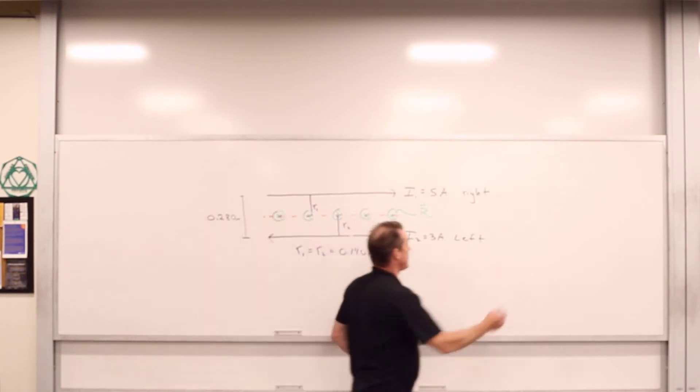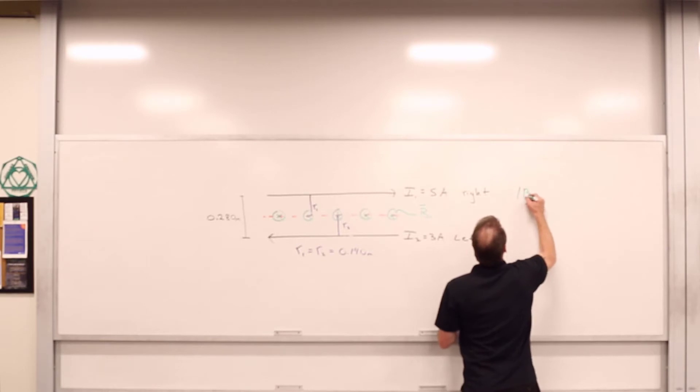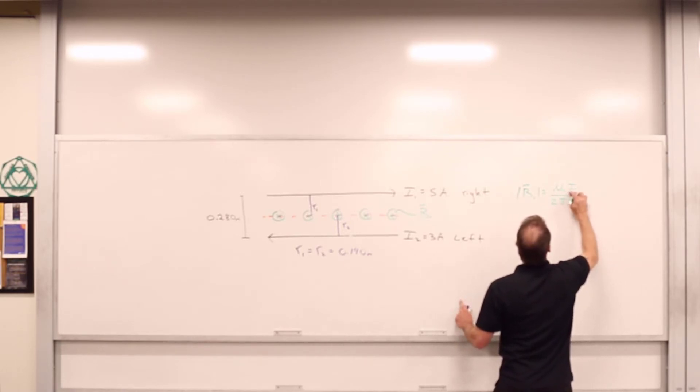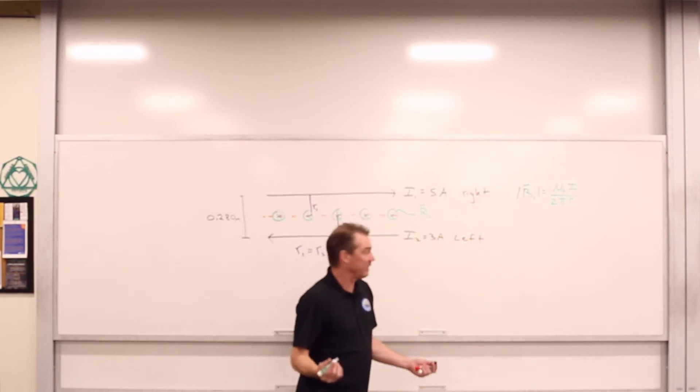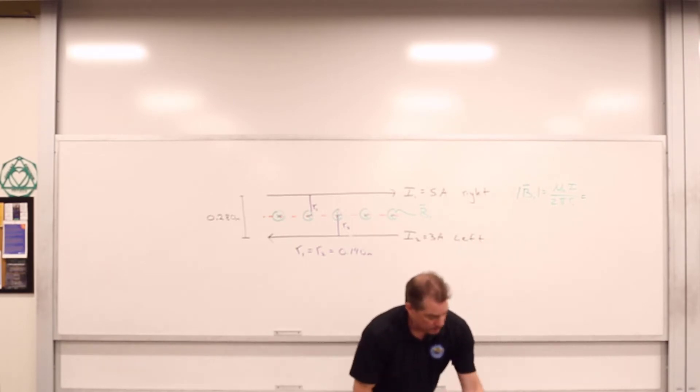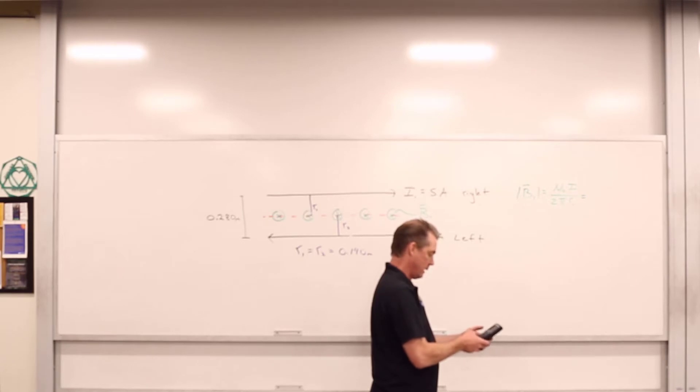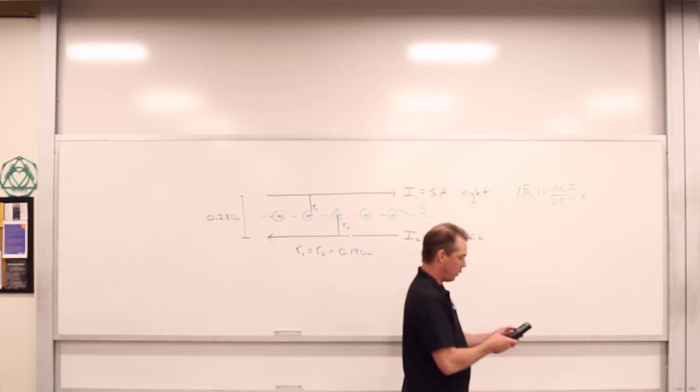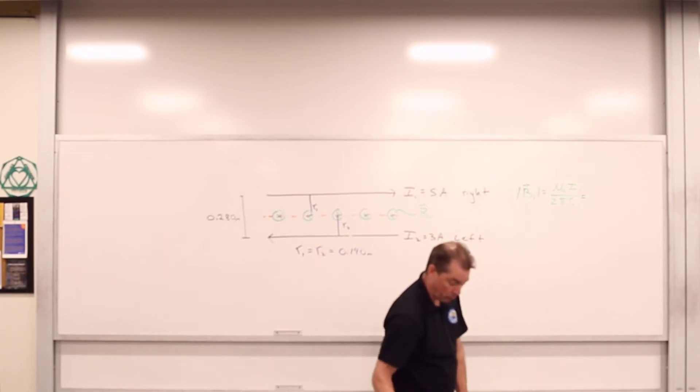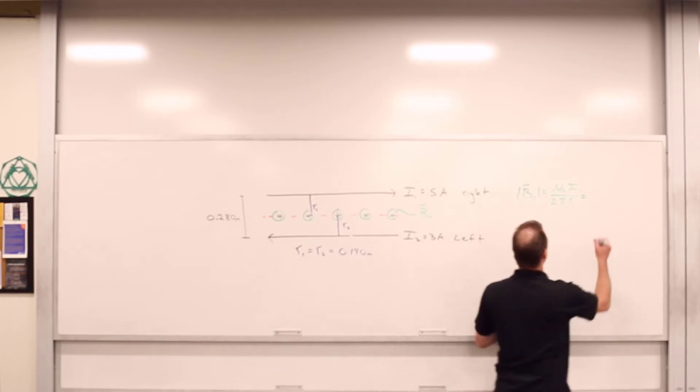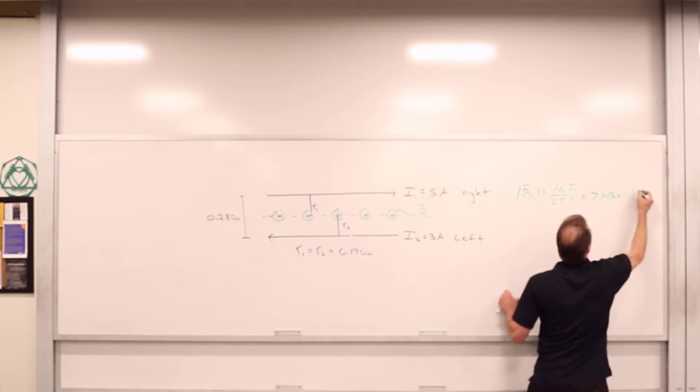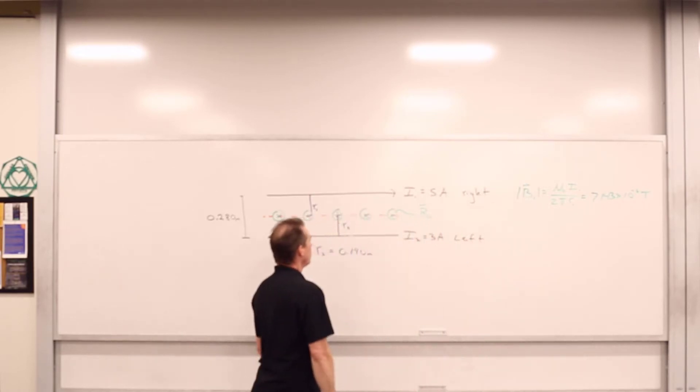So we can say that we've got this magnetic field B1 due to I1 into the board there. And we can go ahead and get its magnitude really easy because the magnitude of B1 is going to be equal to mu_0 I1 over 2 pi times R1. We know what I is, we know what R is. We can go ahead and compute that out. We've got 4 pi times 10 to the negative 7 times 5 divided by the quantity of 2 pi times 0.140. We've got ourselves 7.143 times 10 to the negative 6 Tesla. There we go. We know its magnitude and we know its direction.